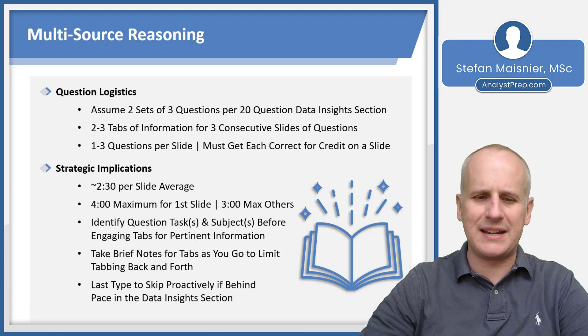And the multi-source reasoning set is going to be the last type of question to skip proactively if you're behind pace in the data insight section. And that is simply because very often if you figure out the answer to one or two of the questions, the other questions, whether they're on subsequent slides or on the same slide, often become relatively apparent. So you really do want to avoid skipping the multi-source reasoning questions because you'll quickly end up missing nearly 20% three questions in a row of the section.